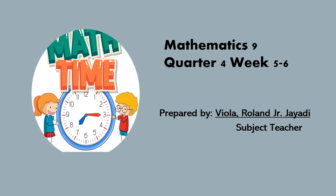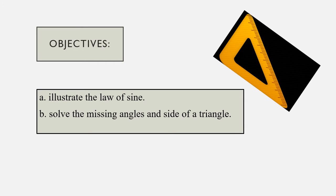Good morning students, welcome to Mathematics 9, Quarter 4, Week 5 and 6. My name is Viola Roland Junior, your subject teacher in mathematics. Our objectives for today's lesson are: (a) illustrate the law of sines, and (b) solve the missing angle and side of a triangle.